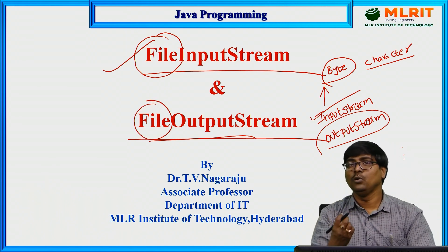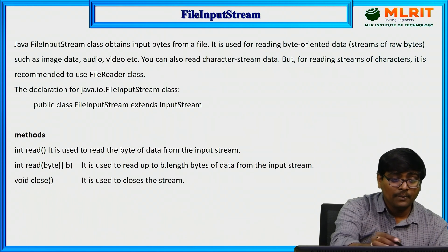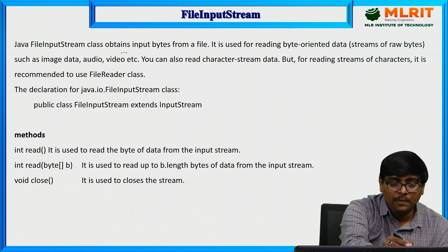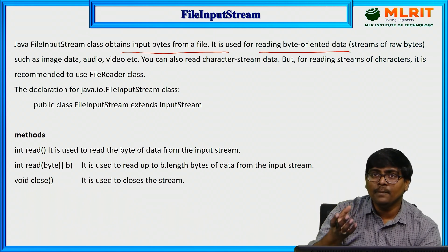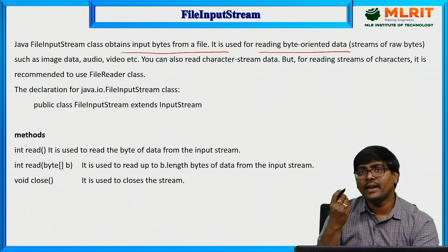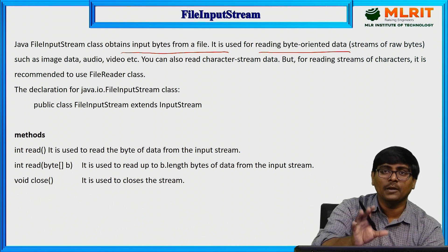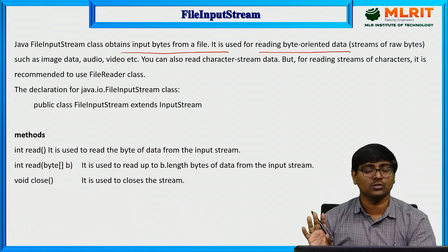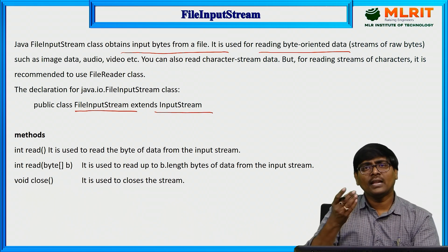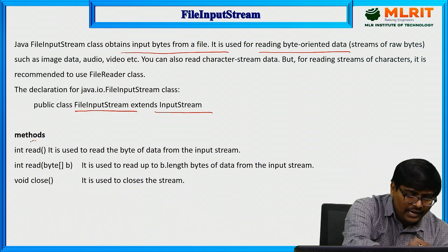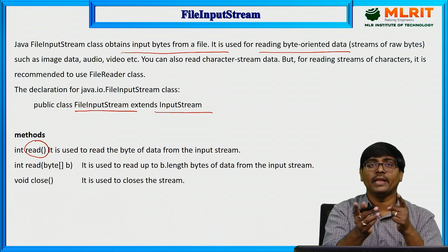So here, input and output both are related to a file. FileInputStream simply obtains input from the file and reads byte-oriented data. Remember, if you are reading byte-oriented data it can read normal text also, but generally it is not preferable. FileInputStream extends the InputStream class. The read method reads one byte of data from the input stream.